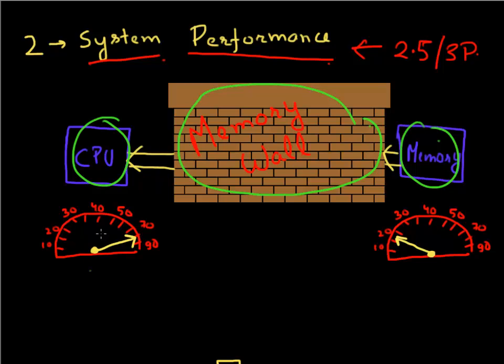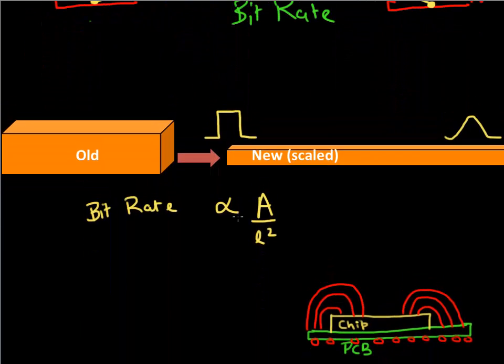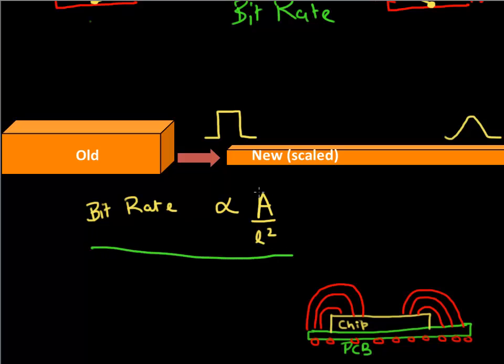CPU traditionally can process the instruction very fast. But the overall system performance is limited by the bandwidth it has in communicating with the memory. So this bandwidth or this number of bits that you can transfer between your memory and your CPU depends upon the interconnect between the memory and the CPU by a simple formula. This bit rate is proportional to the area of your interconnect and it's inversely proportional to the square length of your interconnect.